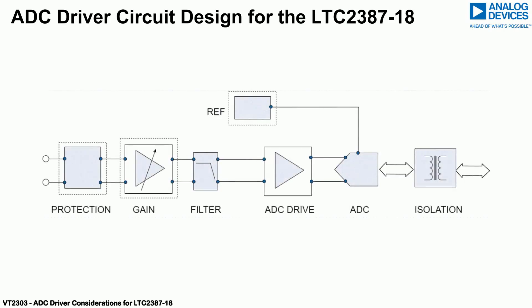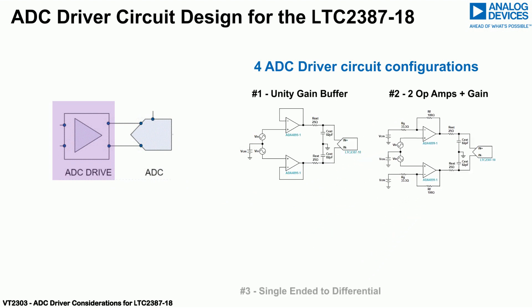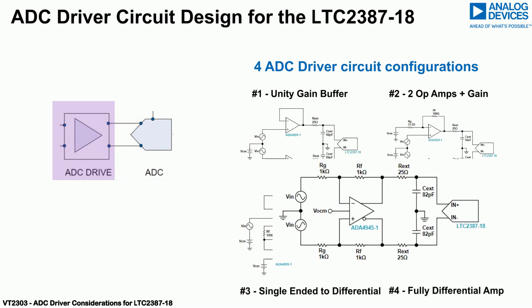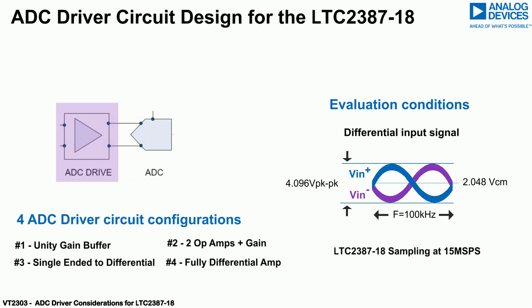Four different circuit configurations are evaluated where the associated SNR and THD performance is obtained for each. These circuits will be analyzed assuming a 100 kHz differential input signal with an amplitude of 4.096 V peak-to-peak, sitting at a common mode voltage of 2.048 V, with the LTC 2387-18 sampling at a rate of 15 mega-samples per second.